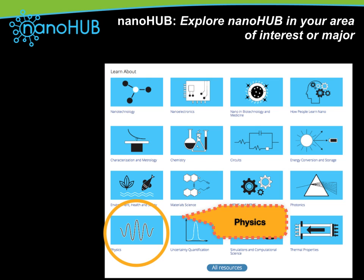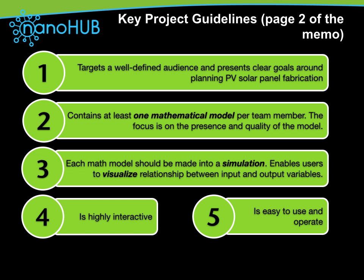Now once you have looked at all of this you will get a good impression of what Nanohub is. So let me talk to you about what we are expecting from you and your team as part of this project. I'm sure you've seen the project memo already. On page two of the memo there are some guidelines that are required of every project, and these are the dimensions along which we are going to be evaluating your work. The first requirement is that your projects must target a well-defined audience and present clear goals around planning PV solar panel fabrication.